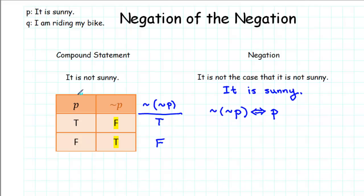And so now we compare the P column with the not, not P column. We notice that they have exactly the same truth values. They both have T in the first row and they both have F in the second row.